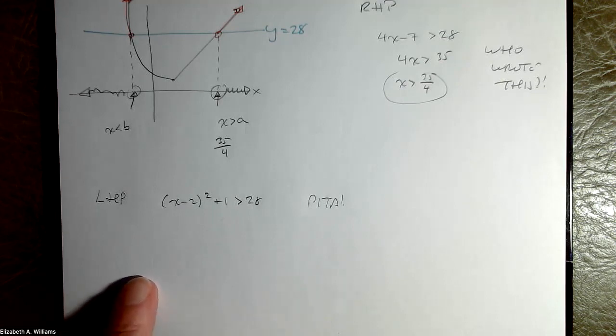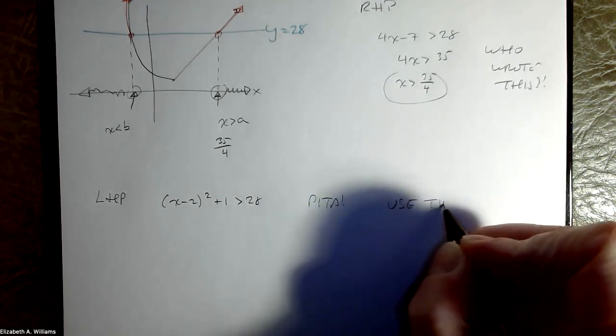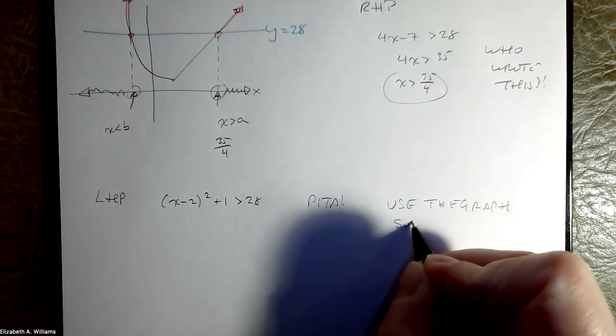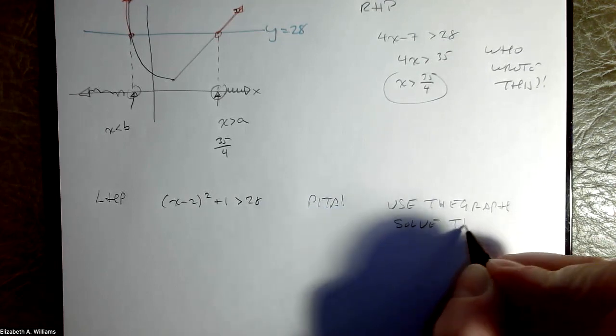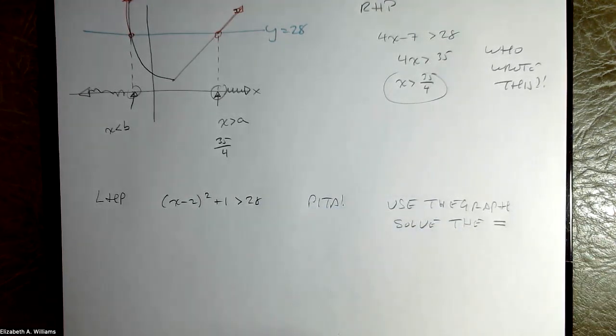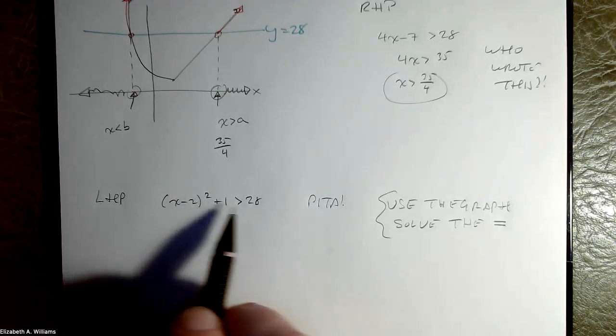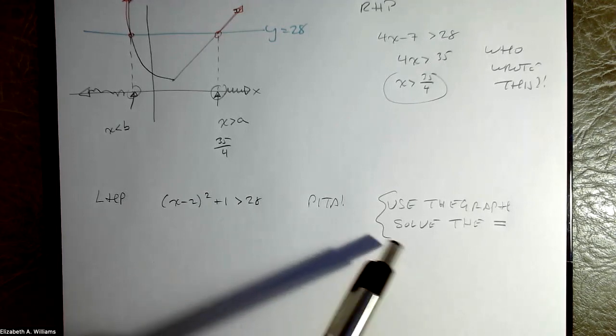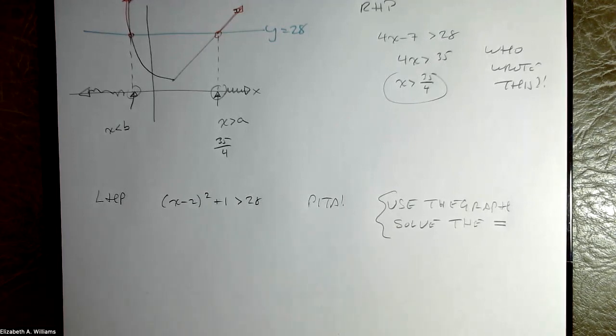But the rule is always going to be, use the graph, solve the equality, solve the equality, use the graph, and then you can figure out what x's you need. Okay, because trying to do square roots within inequalities, well that's why we got bogged down because my brain stopped and I forgot to do it this way. Okay, so this is what you do. So here's the equality.